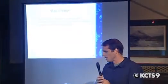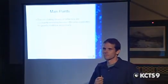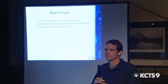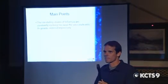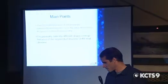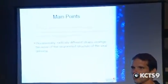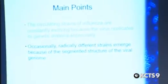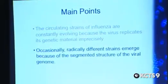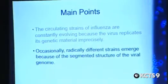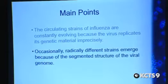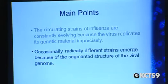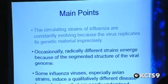The main points I'd like you to take away from tonight are three. One is that the circulating strains of influenza are constantly evolving, and the reason for that is that the virus replicates its genetic material imprecisely. The second is that occasionally a radically different strain emerges, and the primary reason for that is the segmented nature of the viral genome, which can give rise to pandemic strains of the virus.